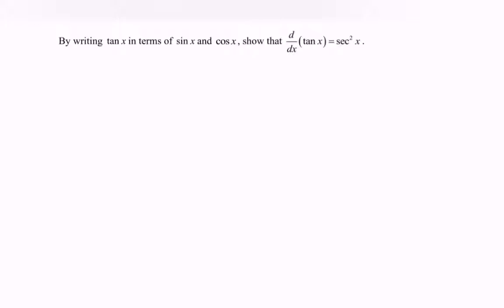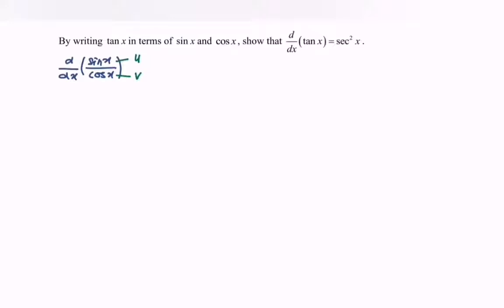First, rewrite the situation where we differentiate sin x over cos x with respect to x. Let sin x be u and cos x be v, meaning that we are going to apply the quotient rule.